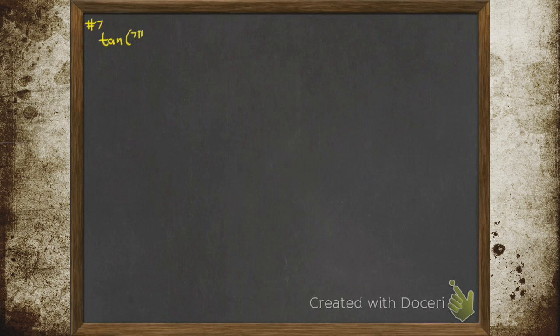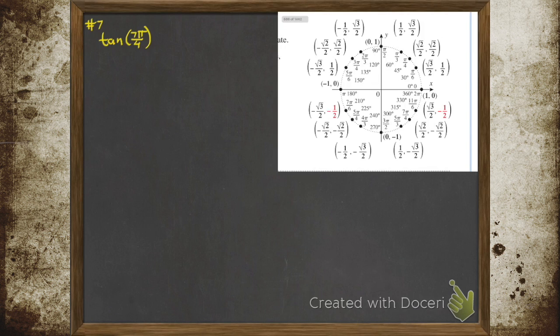We're using a unit circle to evaluate trig functions. What do I have here? I have the tangent of 7π/4. Let's go get that unit circle. Look at that, it's all laid out there for you.